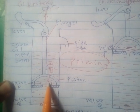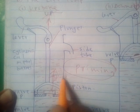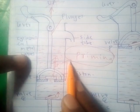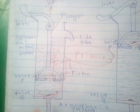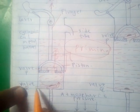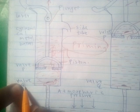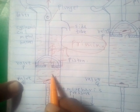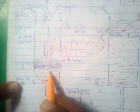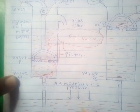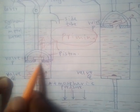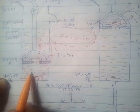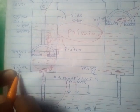When valve P closes and the plunger moves up, the piston also moves up, increasing the volume between valves Q and P. The air above valve Q expands, reducing the pressure inside the barrel below atmospheric pressure. The atmospheric pressure acting on the water in the well, being greater than the pressure of the expanded air above valve Q, forces valve Q to open and pushes water into the barrel.